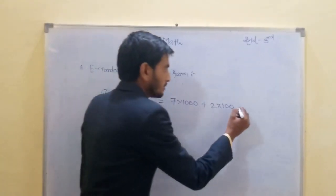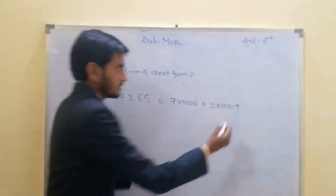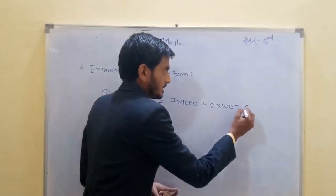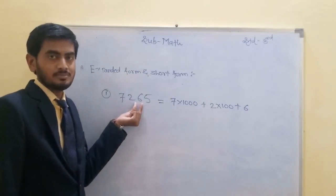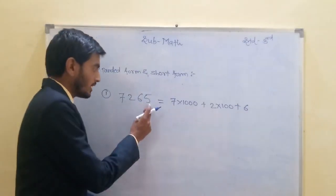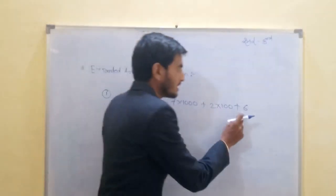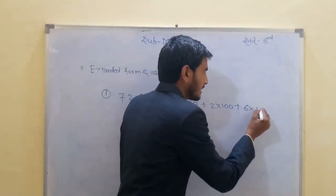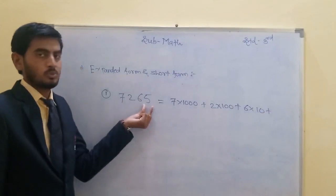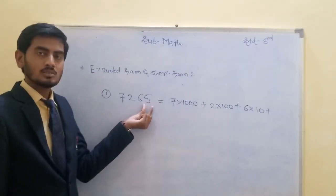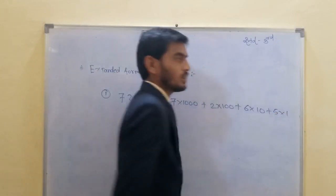Next, plus 6. On which place is 6 placed? On the 1's and 10's place. Means 6 multiplied by 10. And last one, 5. On which place? 1's place. Means 5 multiplied by 1.